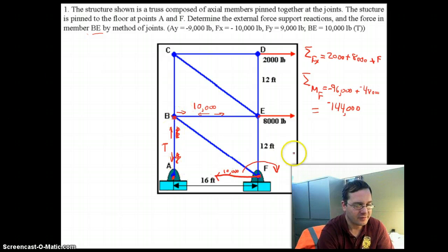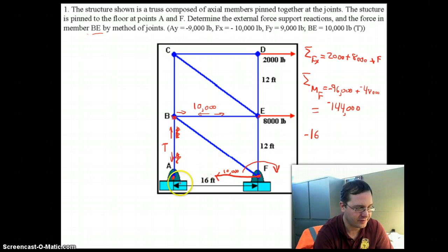And so, the moment, we're trying to figure out the moment that would create this 144,000 pounds. Well, it's negative 16 feet, because point A is to the left of point F, times some force, which I'm going to label as tension. I'm going to label it as tension in member AB equals negative 144,000 pound feet.